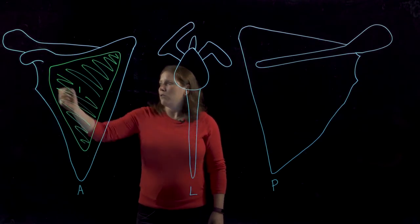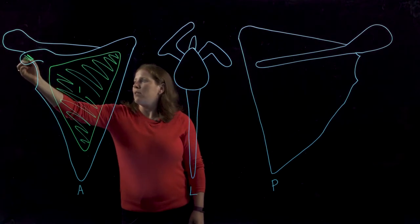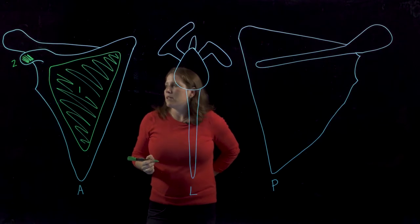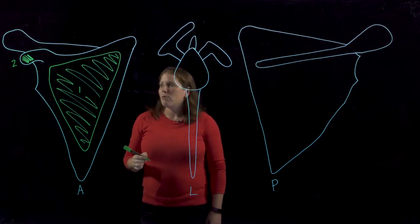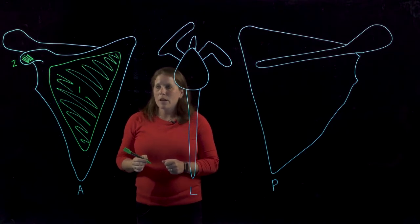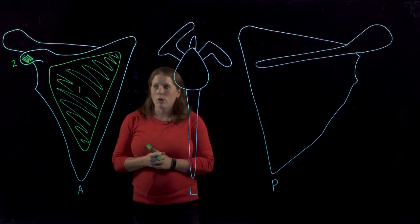We also have this coracoid process here, which is going to have three different muscles that attach to it: pectoralis minor, the short head of biceps brachii, and the muscle called coracobrachialis.